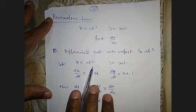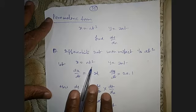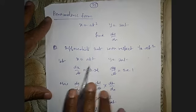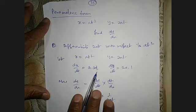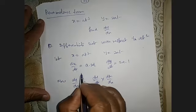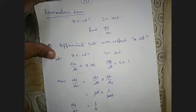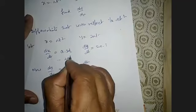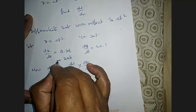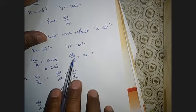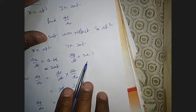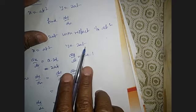Here x depends on t, so t is the independent variable. Differentiating with respect to t: dx/dt — since a is a constant, the derivative of t² is 2t, so dx/dt = 2at. Similarly, for y = 2at, dy/dt — 2a is a constant, and the derivative of t is 1, so dy/dt = 2a.